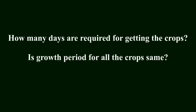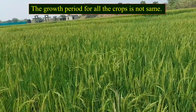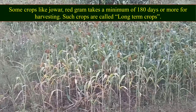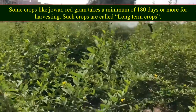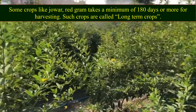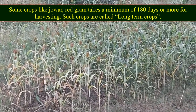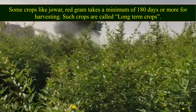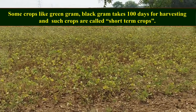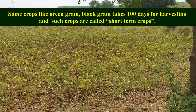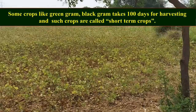How many days are required for getting the crops? Is the growth period for all the crops the same? The growth period for all the crops is not the same. Some crops like jowar and red gram take a minimum of 180 days or more for harvesting — these are called long-term crops. Some crops like green gram and black gram take 100 days for harvesting and are called short-term crops.